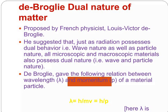The de Broglie dual nature of matter was proposed by French physicist Louis Victor de Broglie. He suggested that just as radiation possesses dual behavior, wave nature as well as particle nature, all microscopic and macroscopic material also possesses dual nature, wave and particle nature. De Broglie gave the following relations between wavelength and momentum of a material particle: lambda equals h by p.